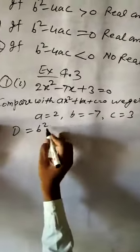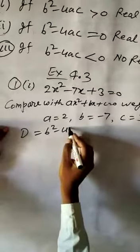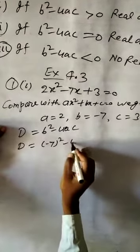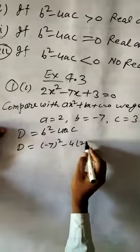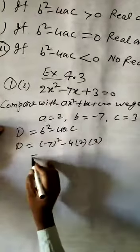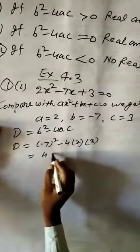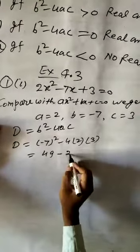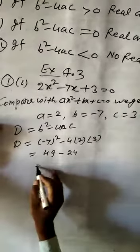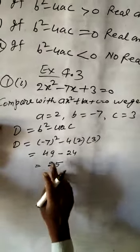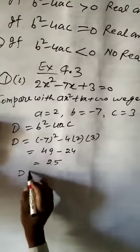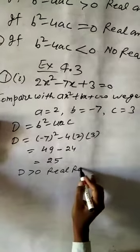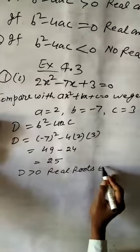We get A equal to 2, B equal to minus 7, C equal to 3. D equal to B square minus 4AC, so D equal to minus 7 squared minus 4 times 2 times 3, which is 49 minus 24 equal to 25. Since D greater than 0, real roots exist.